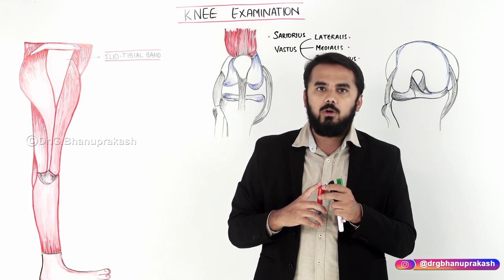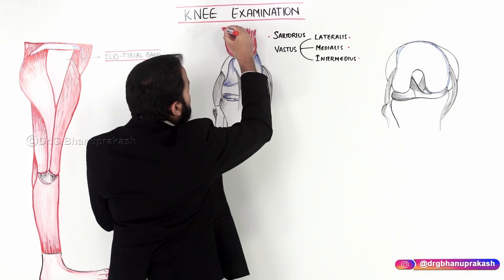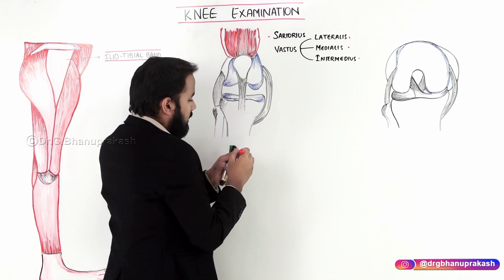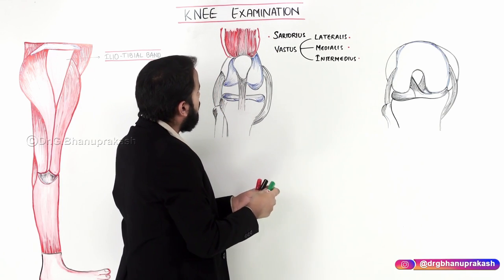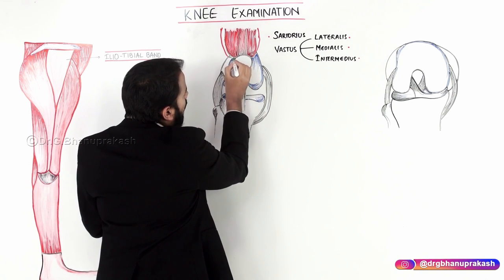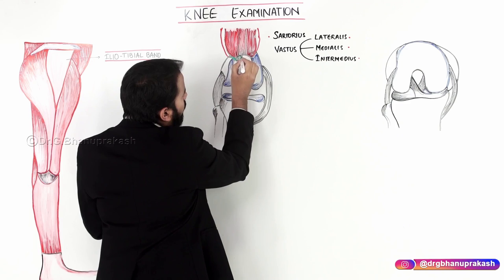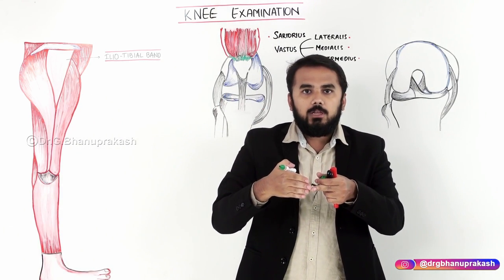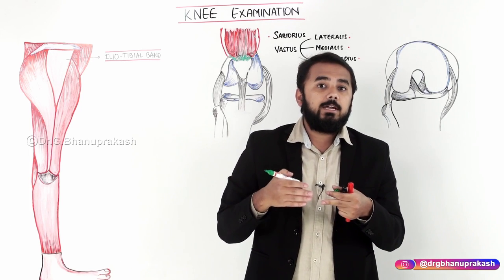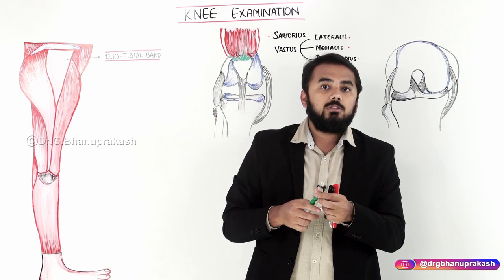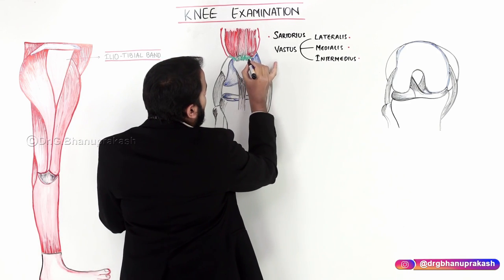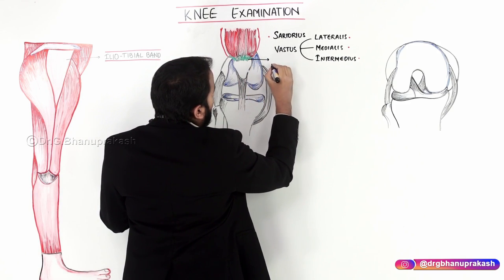All four quadriceps muscles join together to form a common tendon. This tendon is called the quadriceps tendon.